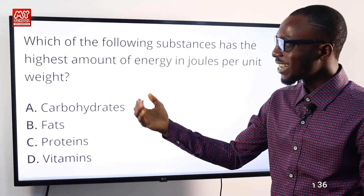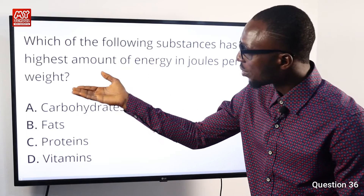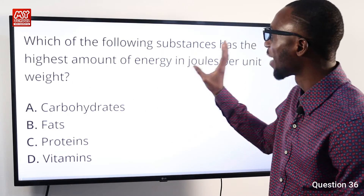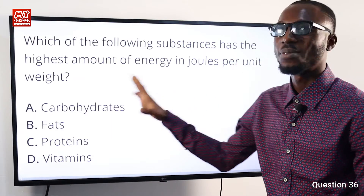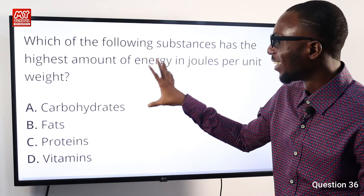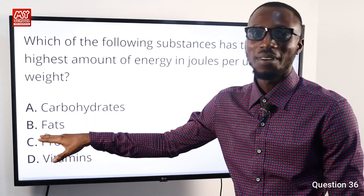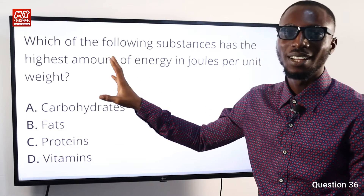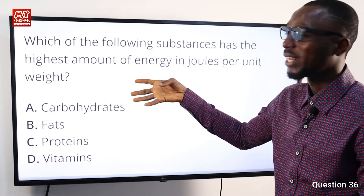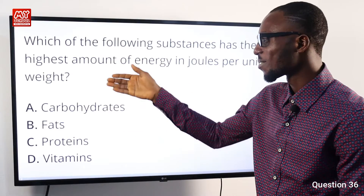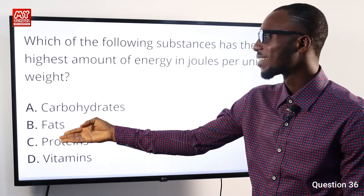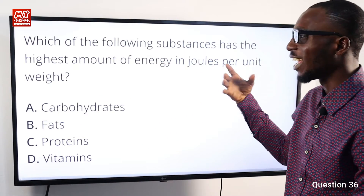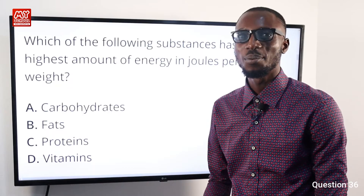Question 36: Which of the following substances has the highest amount of energy in joules per unit weight? The answer is fat. After fat comes protein, then carbohydrates. So option B is correct — fat has the highest amount of energy in joules per unit weight.